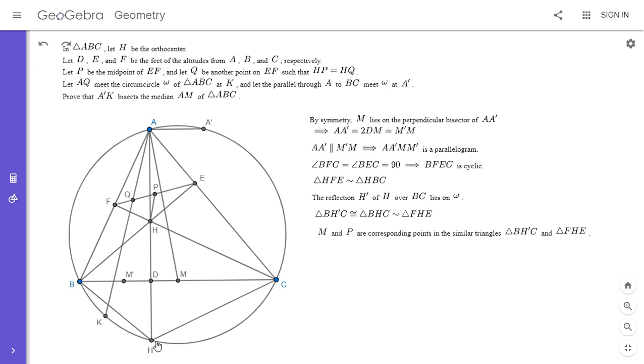But it's also very easy to see that H prime M is equal to H prime M prime. That's obvious because M prime is the reflection of M over point D. So I'm going to write this out.